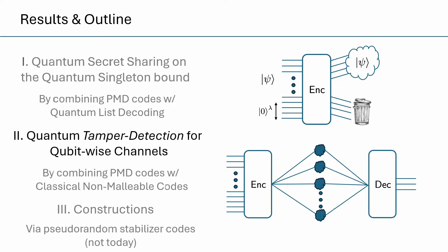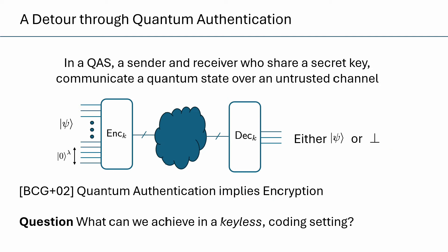My second application is on quantum tamper detection for qubit-wise channels. The underlying motivation lies in quantum authentication schemes. In a quantum authentication scheme, a sender and receiver who share a secret key attempt to communicate a quantum state over some untrusted channel, where the guarantee is that the decoder either gets the state back or rejects. In seminal work, Barnum et al. proved that quantum authentication actually implies encryption, meaning the channel can't extract any information about the underlying message — hinting at the connection between tampering and privacy.